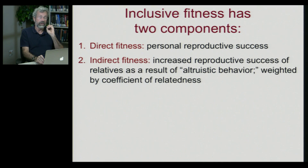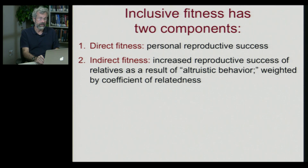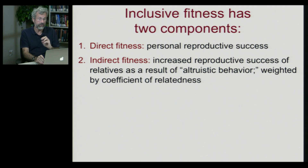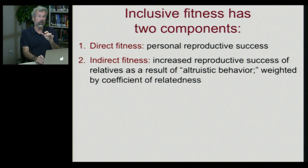But with inclusive fitness we have a second component, called indirect fitness. This is the increased reproductive success of your close relatives as a result of your altruistic behavior, weighted by a coefficient of relatedness.